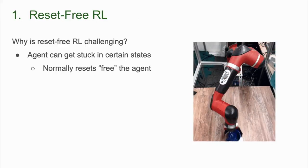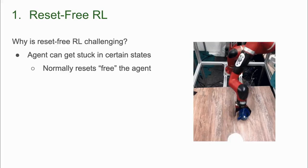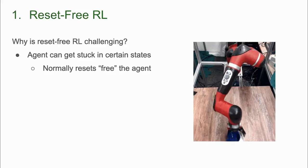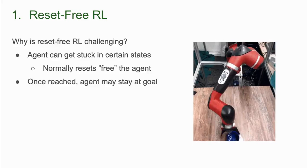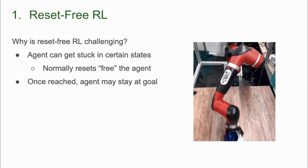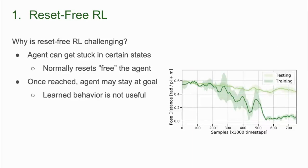We start with the problem of learning without resets. We find that when run reset-free, robots can get stuck in certain states for long periods of time, while normally resets prevent robots from getting stuck for longer than an episode. Another challenge is that if the robot is successful and the environment is not reset, the robot will not continue learning since the optimal behavior is to do nothing. The robot then fails to learn how to successfully accomplish the task from a variety of initializations. We observe this phenomenon in experiments, shown in the figure on the right — even though training performance is strong, the learned policy is not useful at test time when evaluated starting from different states.